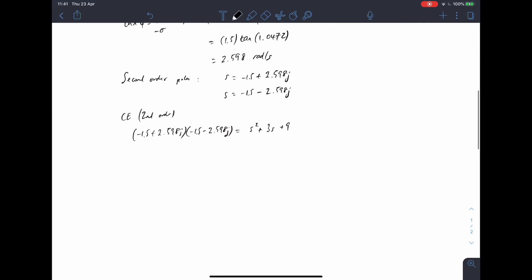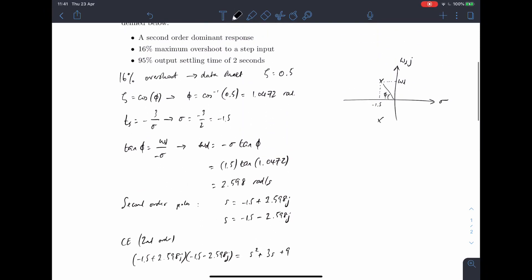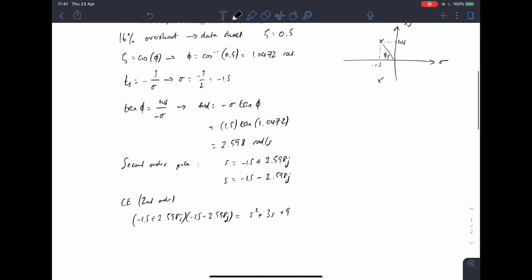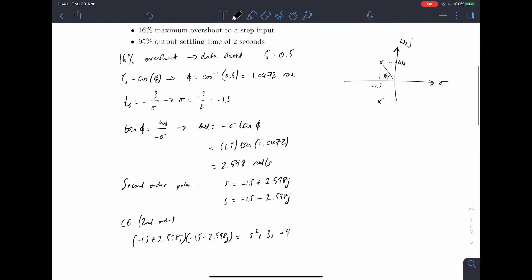Now, so that, but the problem we've got here is that's the second order, that's our second order denominator response. But you can notice up here in the solution that we've got a third order system. So we need to add another pole somewhere on this diagram. And what we do is we add a pole over here.